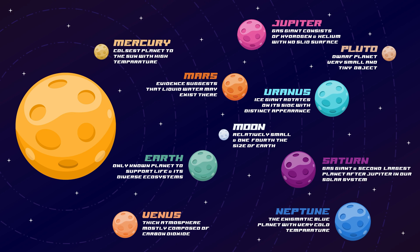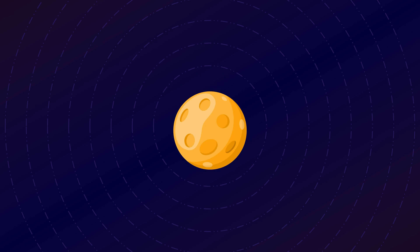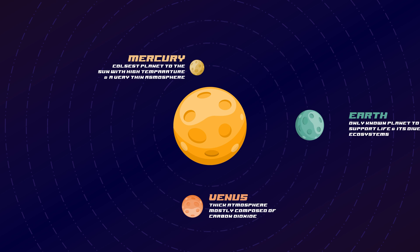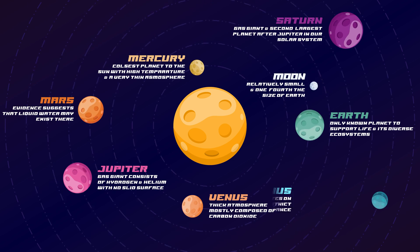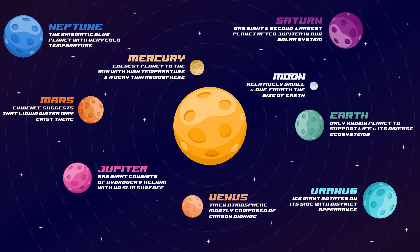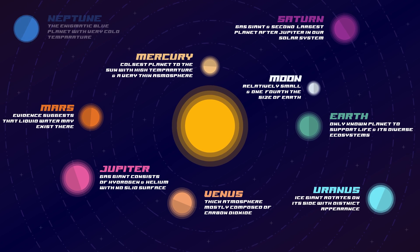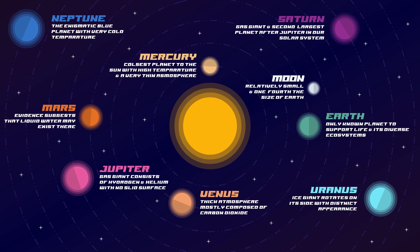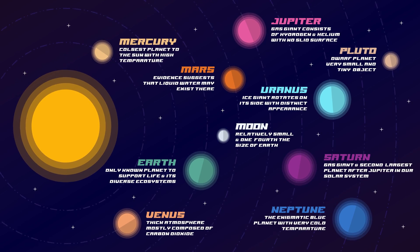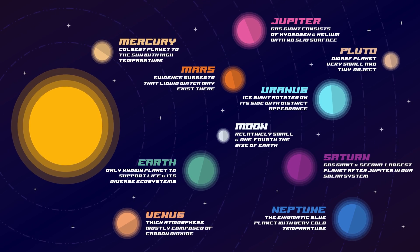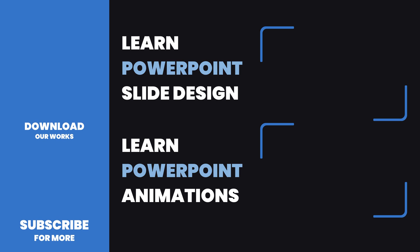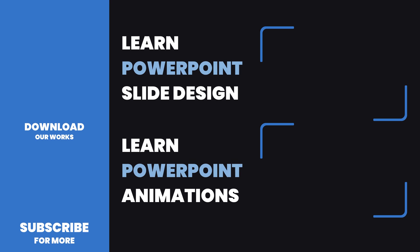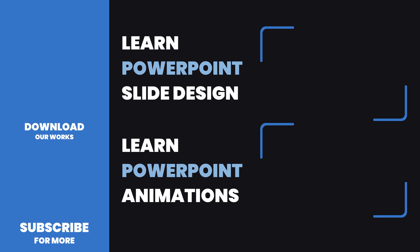And finally, we are done for today. It was a very long tutorial, but I tried to keep it as easy as possible. I have created an animated bundle template for space elements and the solar system in different layouts and designs — if interested, check the description for the link. It is available to both Patreon and Buy Me a Coffee sponsors. If you enjoyed this tutorial, please give a like, let me know your thoughts in the comments, and I'll see you in the next video with another amazing PowerPoint tutorial. Thanks for watching.